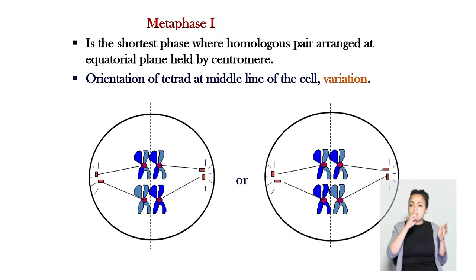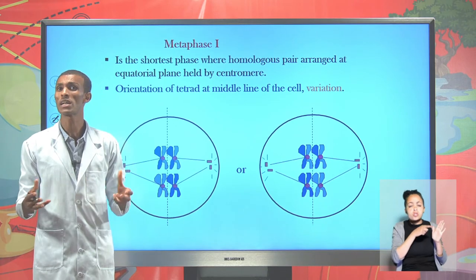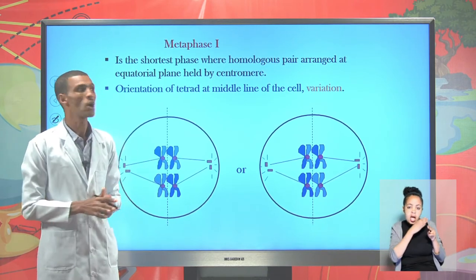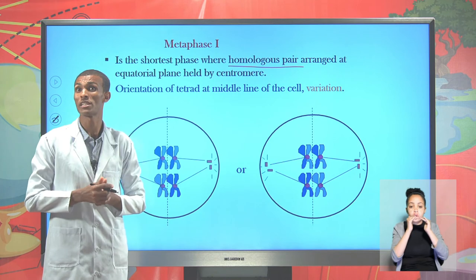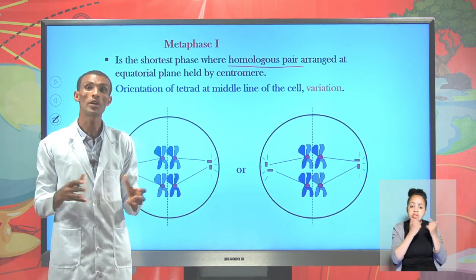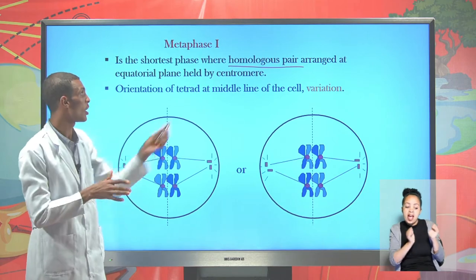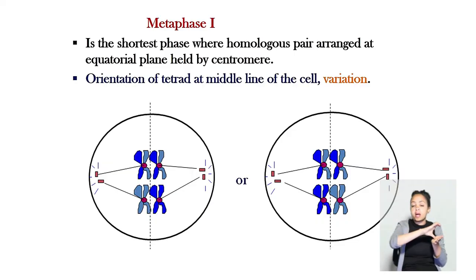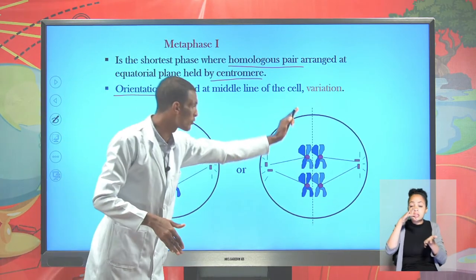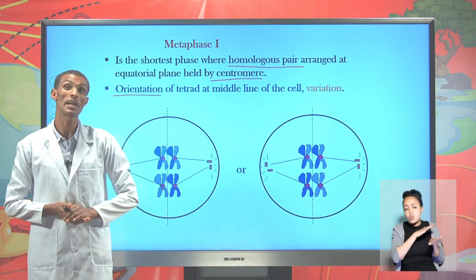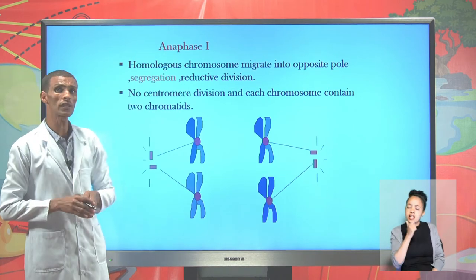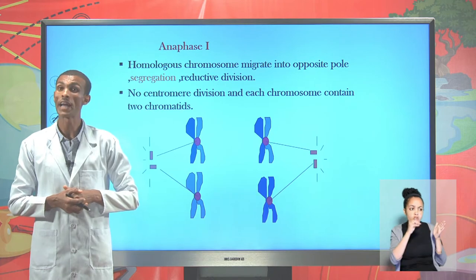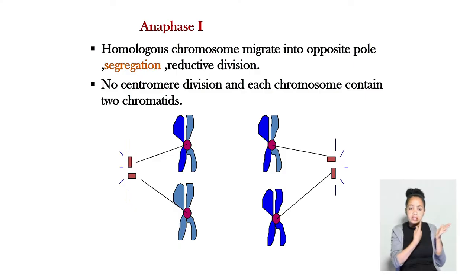Metaphase one is considered the shortest stage of meiosis one. During metaphase one, the homologous pairs become arranged at the equatorial plate of the cell. The original and the copy remain held together by the centromere. When the tetrads are arranged at the middle line of the cell, we say it is metaphase one.